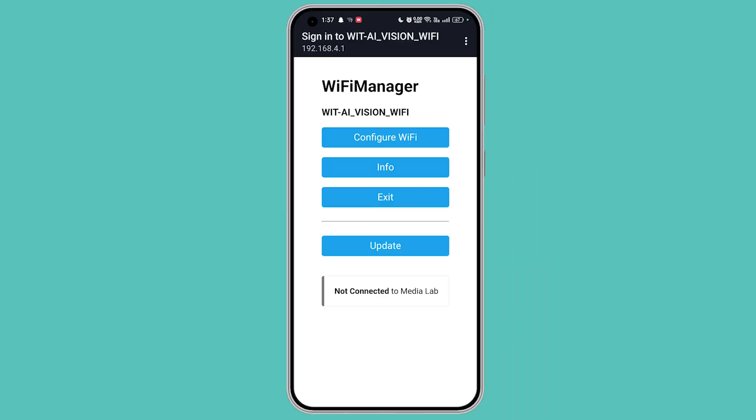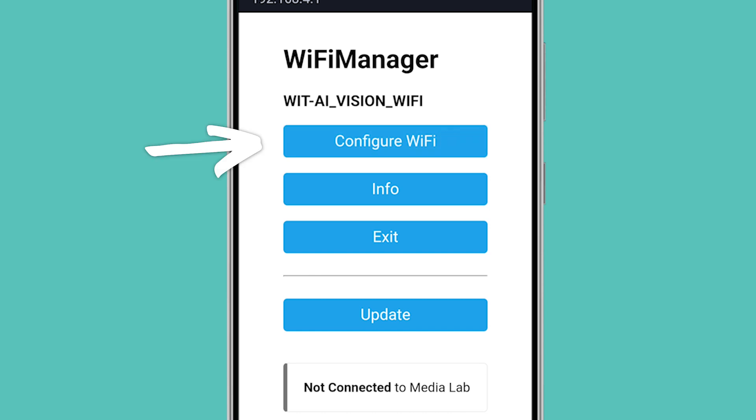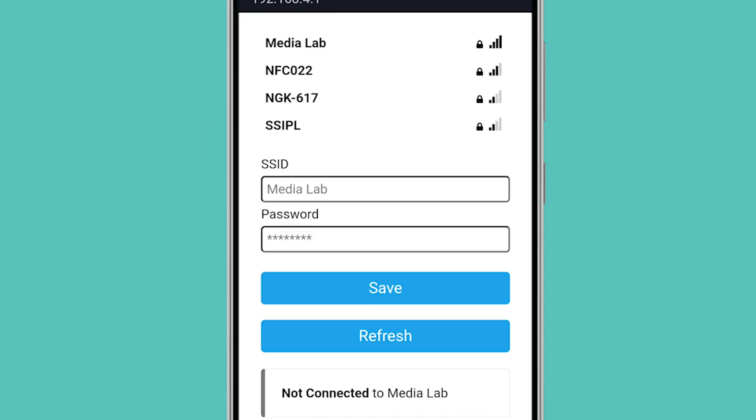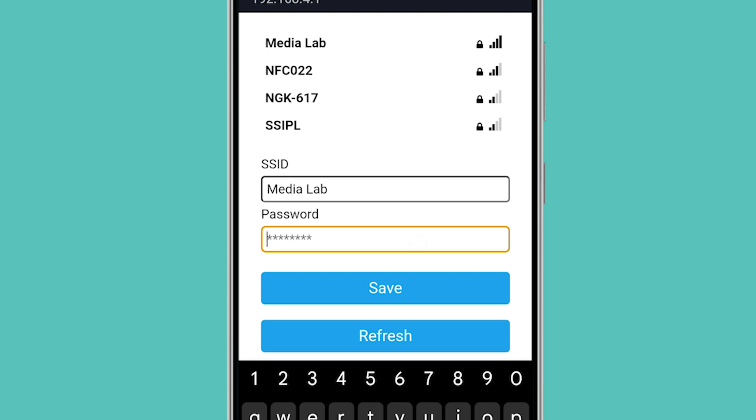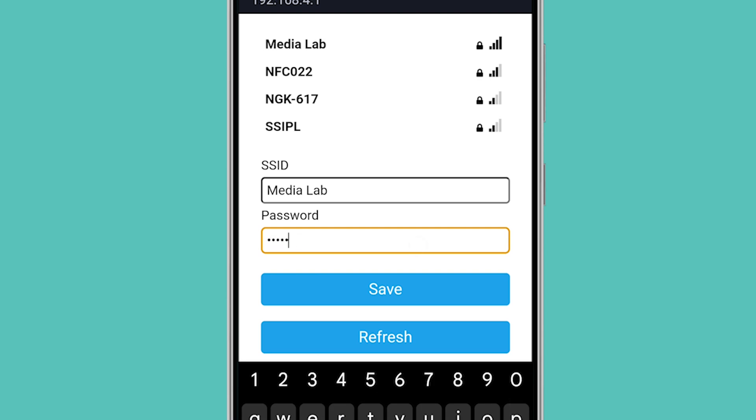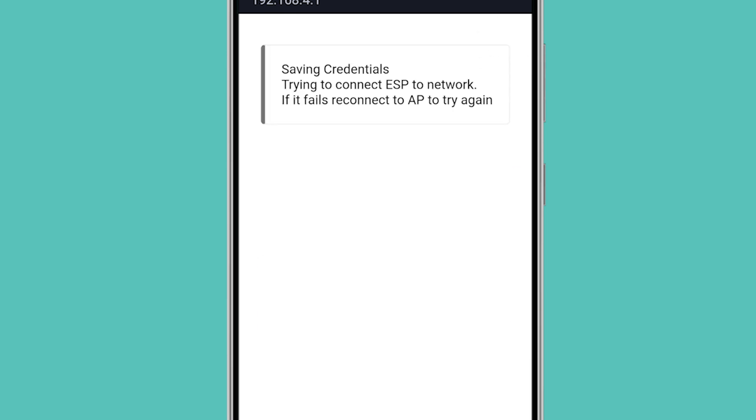The Wi-Fi configuration page will automatically open up. Now go to configure Wi-Fi. The page will list down all available Wi-Fi networks. Select your Wi-Fi network and enter the password and click on save.